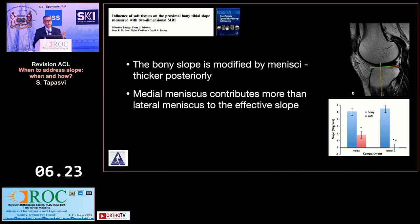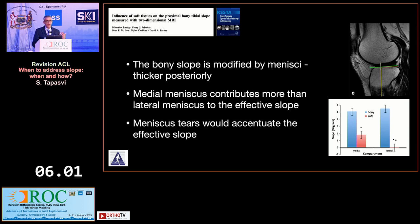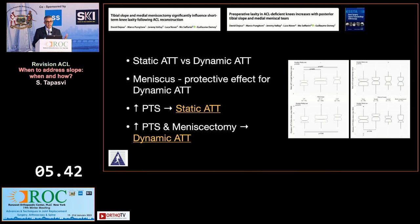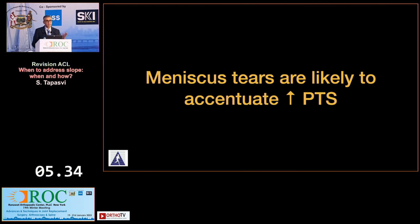The third aspect is the menisci. What we measure on radiographs is the bony slope, but in reality the meniscus sits on top of the tibial plateau, giving us a soft tissue slope as well. This meniscus modifies the bony slope; the medial meniscus contributes more than the lateral. A meniscus tear will accentuate the effective slope, affecting both static and dynamic anti-tibial translation. Meniscus tears in the presence of a high tibial slope are likely to produce more damage.